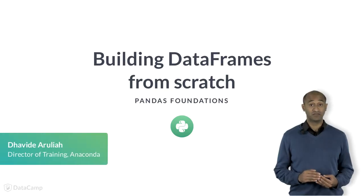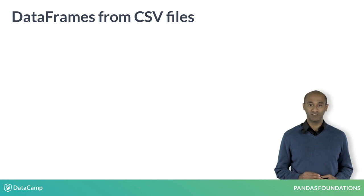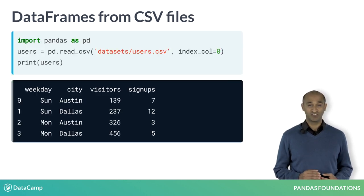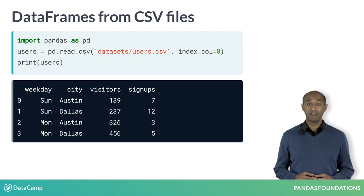We've seen how to work with data frames in memory, but how do we get them in memory? In the Intermediate Python for Data Science course, we used read.csv to load a data frame from a comma separated values file. For instance, here we use the file users.csv to create a data frame called users. The file records visitors to a blog for a band and who signed up for a newsletter. By tracking where visitors come from, this intervention can help design tools later.